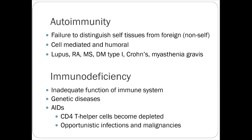Autoimmunity is a failure to distinguish self-tissues from foreign. Lupus can present really mild to basically asymptomatic, or have all sorts of complications — renal, skin, or rheumatoid arthritis-like symptoms. Type 1 diabetes, rheumatoid arthritis, and Crohn's we'll talk about next spring. Myasthenia gravis and MS we don't talk about a ton — I've got a quick slide on MS here in a second.